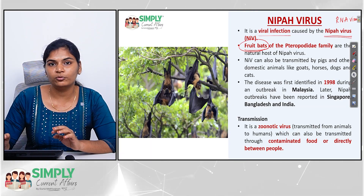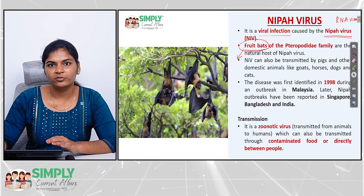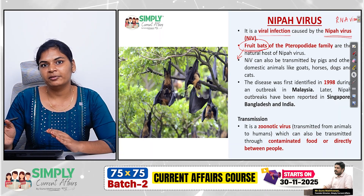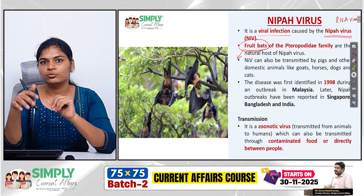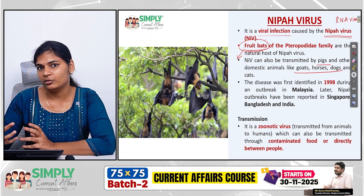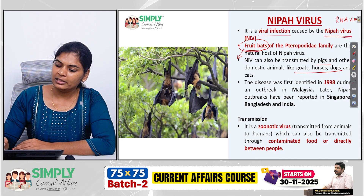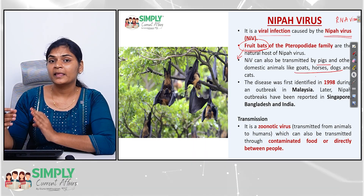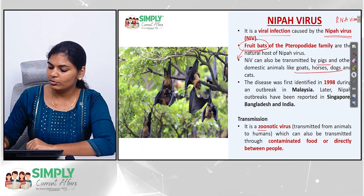So who is the vector here? Fruit bats of the Pteropodidae family are the vectors of Nipah virus. Any fruit infected with the saliva or urine of fruit bats — if someone consumes those fruits, then Nipah virus gets transmitted. It can be transmitted either to humans or to certain animals like pigs, goats, horses, and dogs. Fruit bats are referred to as the natural host or natural reservoir of Nipah virus, while these animals are referred to as intermediate hosts.